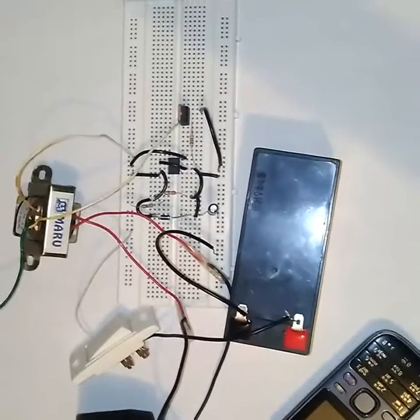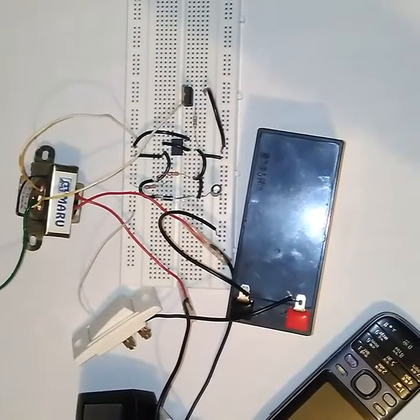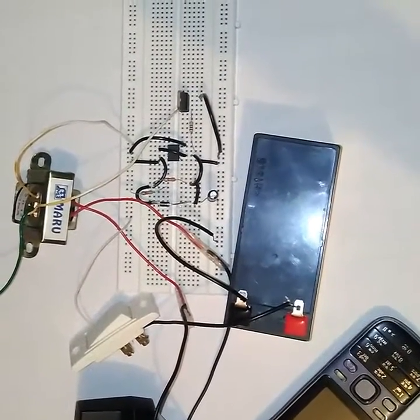So basically in this circuit we are creating an AC current from a DC source battery which is a 12V battery.